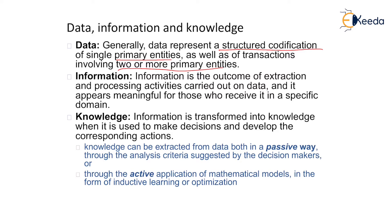Third is knowledge. Information is transformed into knowledge when it is used to make a decision and develop the corresponding actions. Knowledge can be extracted from data both in a passive way or in an active way. In a passive way, it is through the analysis criteria suggested by the decision maker. In an active way, it is through the active application of a mathematical model in the form of inductive learning or optimization, through which we can get proper knowledge.